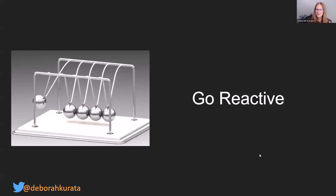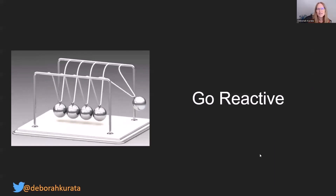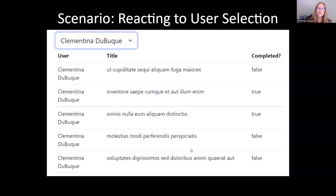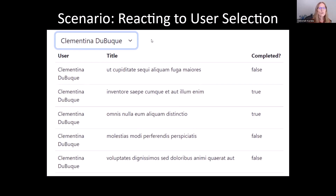Go reactive. What do I mean by that? Let's talk through a scenario. In this scenario, you're working with your team, and each of your team members have a list of tasks that you keep the status of. You come in in the morning and you want to check on everyone's status, so you want to be able to pick a user and get user information.